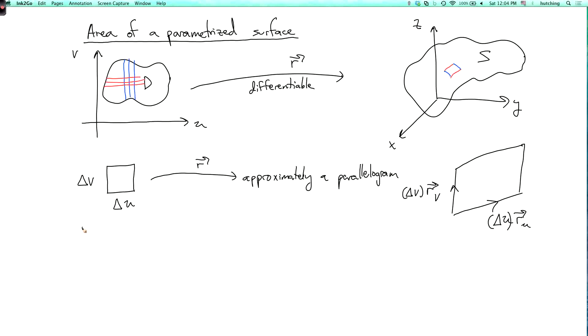And the other side is delta v times the vector r_v. And the area of the parallelogram is the magnitude of the cross product of its two sides. So it's delta u r_u cross delta v r_v. And I can pull out the delta u and the delta v and write this as r_u cross r_v times delta u delta v.